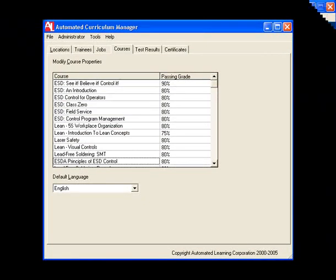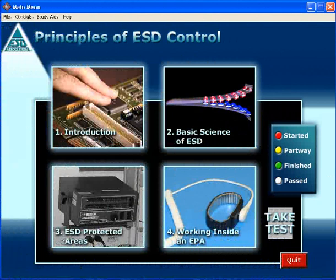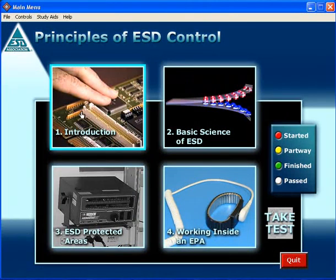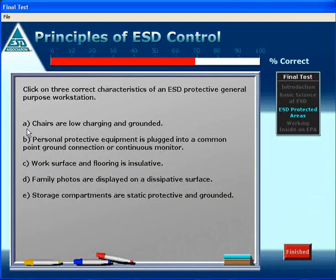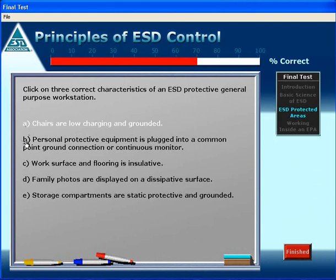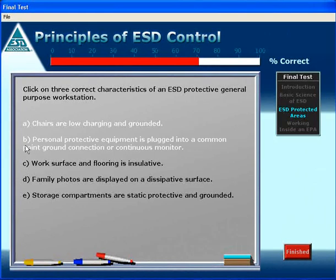This course is organized into four modules that explain step-by-step the importance of controlling static in your workplace, how static occurs, and how to protect against discharges that can damage static sensitive electronic components and assemblies. The course comes complete with certification testing that provides feedback on every response for enhanced learning and verifies that students have understood the course content.